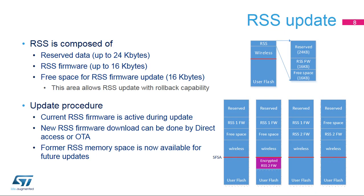This slide presents the RSS firmware update procedure. The RSS firmware itself can be updated. Two slots are available for the RSS firmware: one for the active RSS code and one for the installation of a new one. The new encrypted and signed RSS firmware is downloaded, either via a wired connection or over the air. Once decrypted and authenticated, the new RSS becomes active. Then the old one is removed and its slot becomes free for a future update.